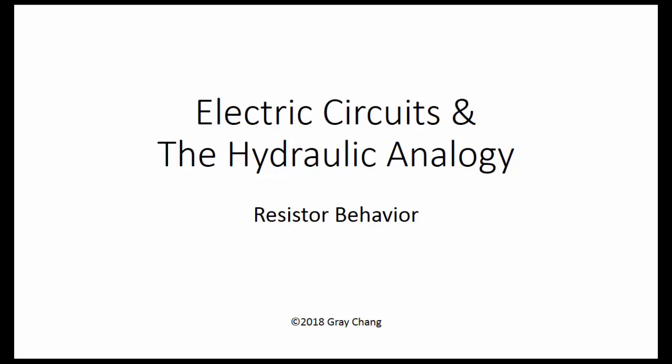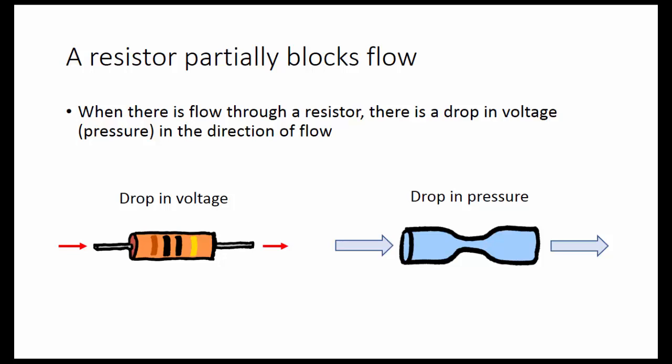Electric Circuits and the Hydraulic Analogy: Resistor Behavior. A resistor partially blocks flow. When there is flow through a resistor, there is a drop in voltage or pressure in the direction of flow — a drop in voltage for an electronic resistor, and a drop in pressure for a hydraulic resistor.